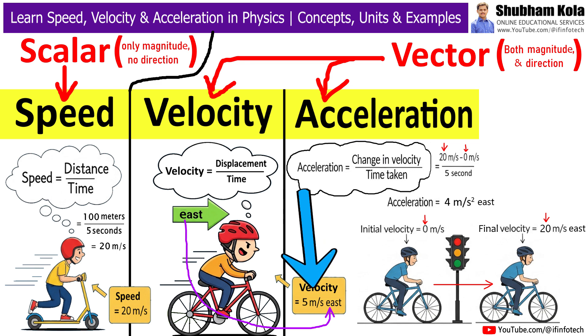The units of velocity are same as speed, that is meters per second or kilometers per hour, but with direction included. And because velocity has both magnitude and direction, it is a vector quantity.